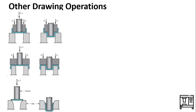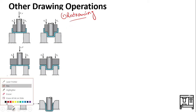The first specialized operation is redrawing. If the shape change required by the part design is too severe — if we have a very high amount of deformation to be made in the blank — then the drawing operation is not performed in a single step; rather it is performed in multiple steps. The second drawing step and any further drawing steps needed are referred to as the redrawing operation.